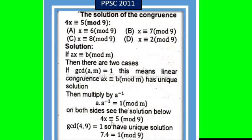minus 1 subtract, x ≡ 8(mod 9), so option C is correct, that is x ≡ 8(mod 9).